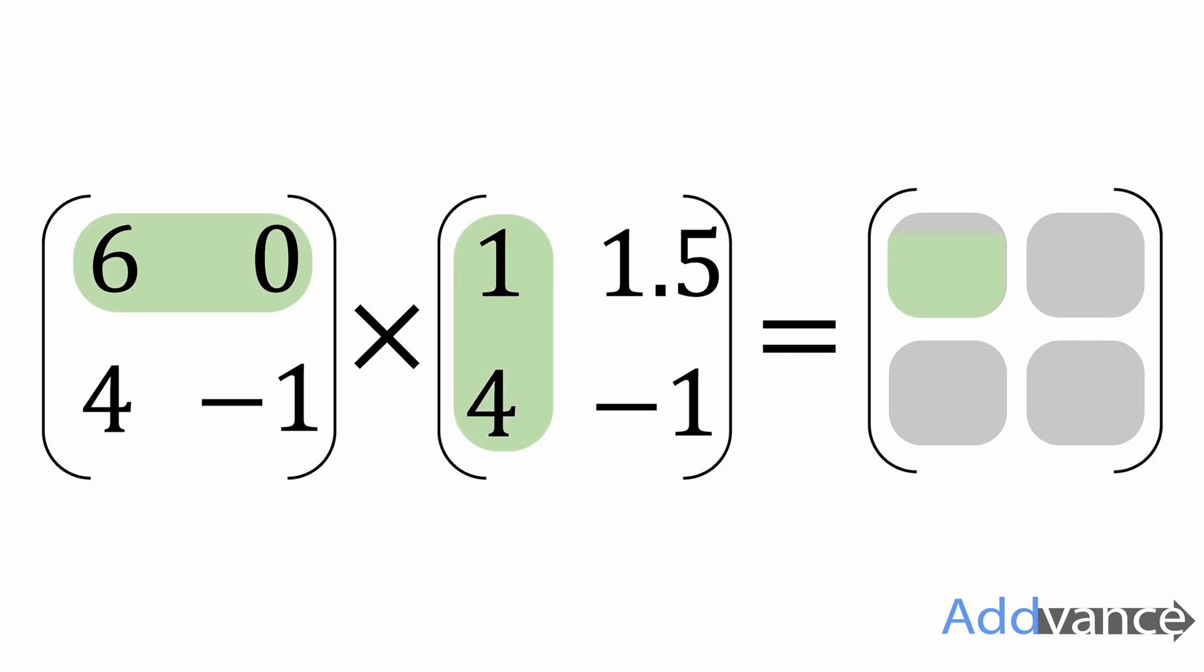Now let's multiply a matrix by a matrix. And to get the first number in my matrix, I'm going to multiply the top row by the first column. I'm going to do 6 times 1 plus 0 times 4. 6 times 1, 0 times 4. Now that gives me 6.